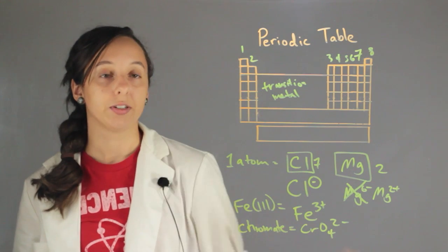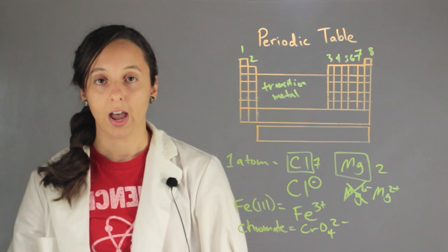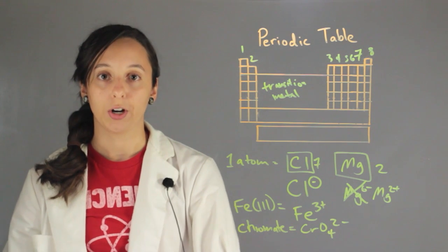So these are the three different types of ions and how to identify their charges. I'm Robin Higgins, and this has been how to figure out the charge of an ion.